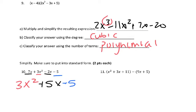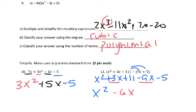And number 11, distribute your negative. So you're left with x squared plus 3x plus 11 minus 9x and minus 5. Again, it goes to both terms. And then you just combine like terms. x squared comes down. Your 3x and 9x go together giving negative 6x. And your 11 and negative 5 give you a positive 6. So these were your answers to both 10 and 11.